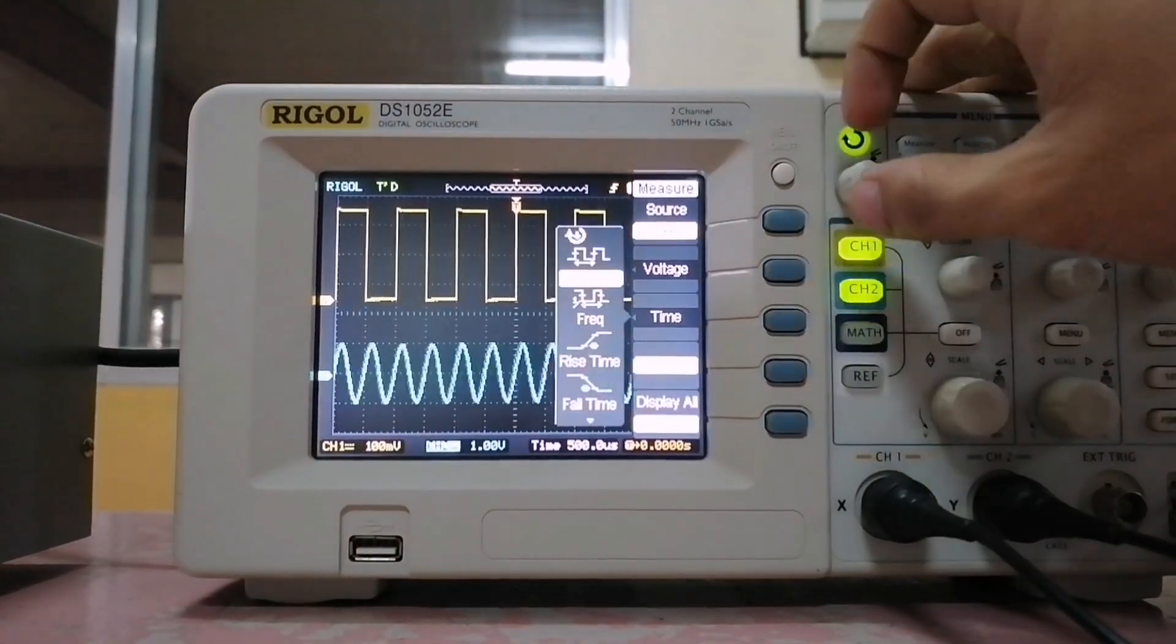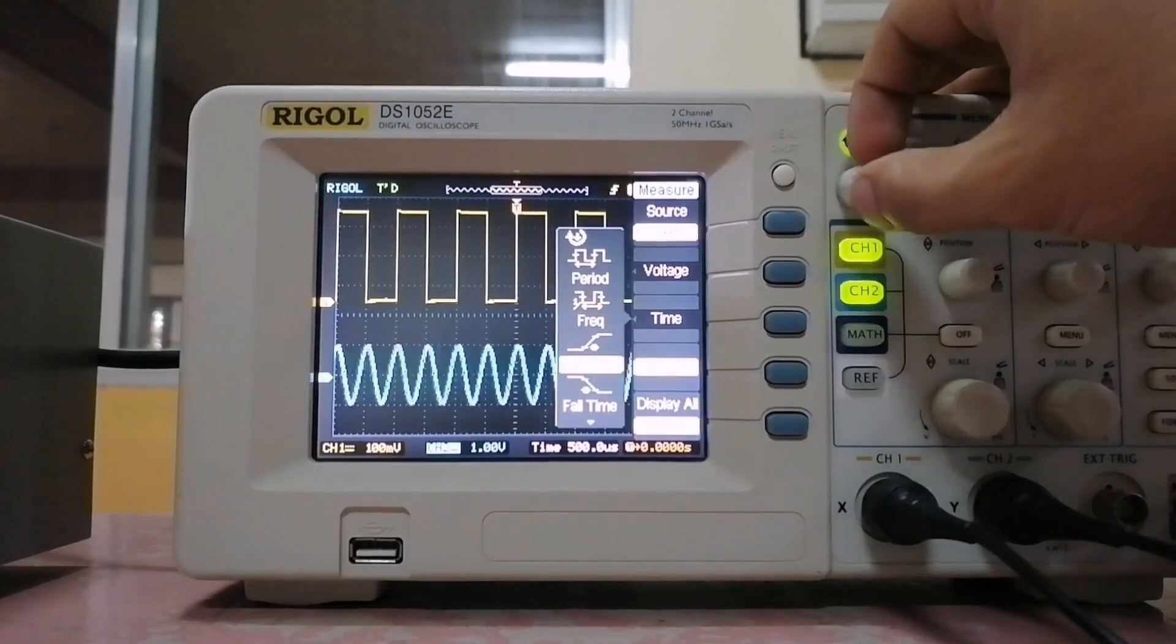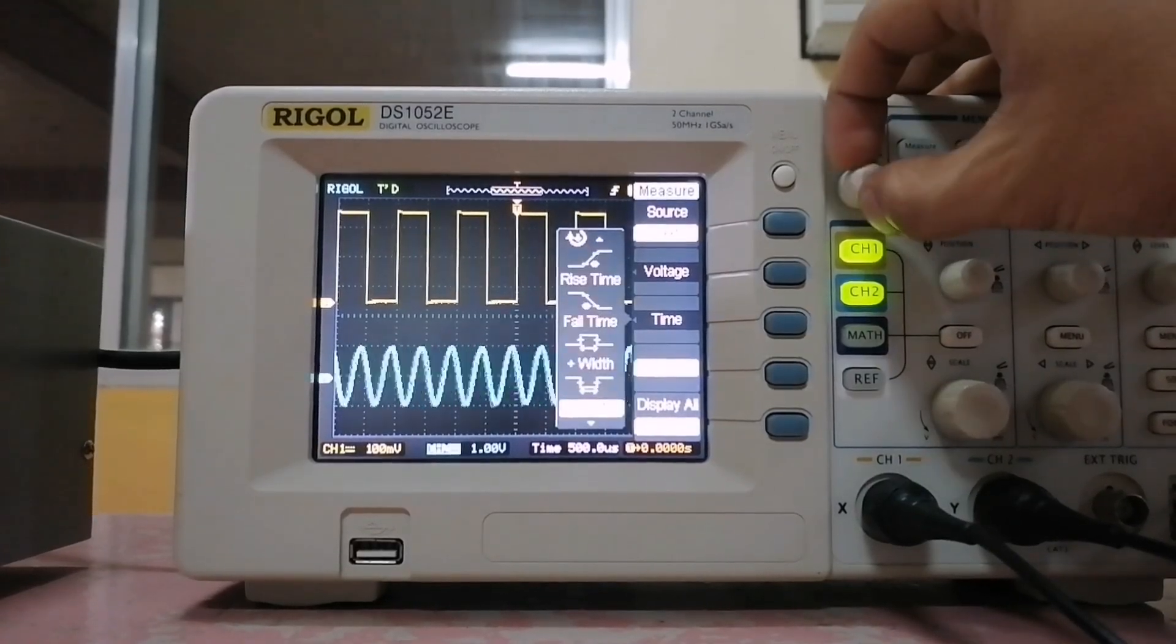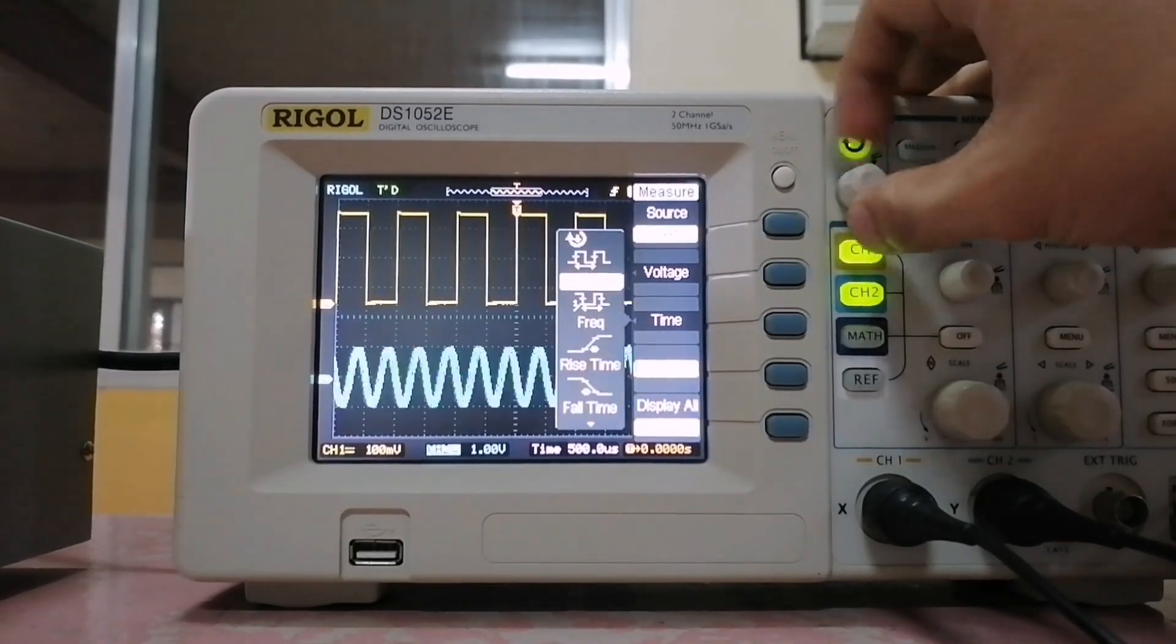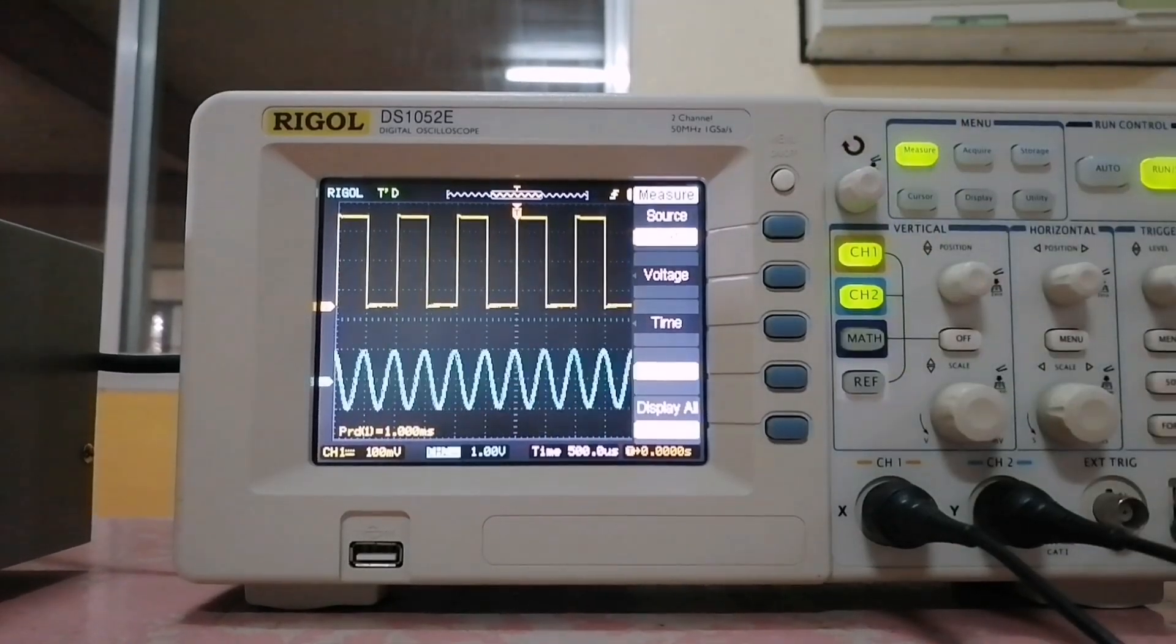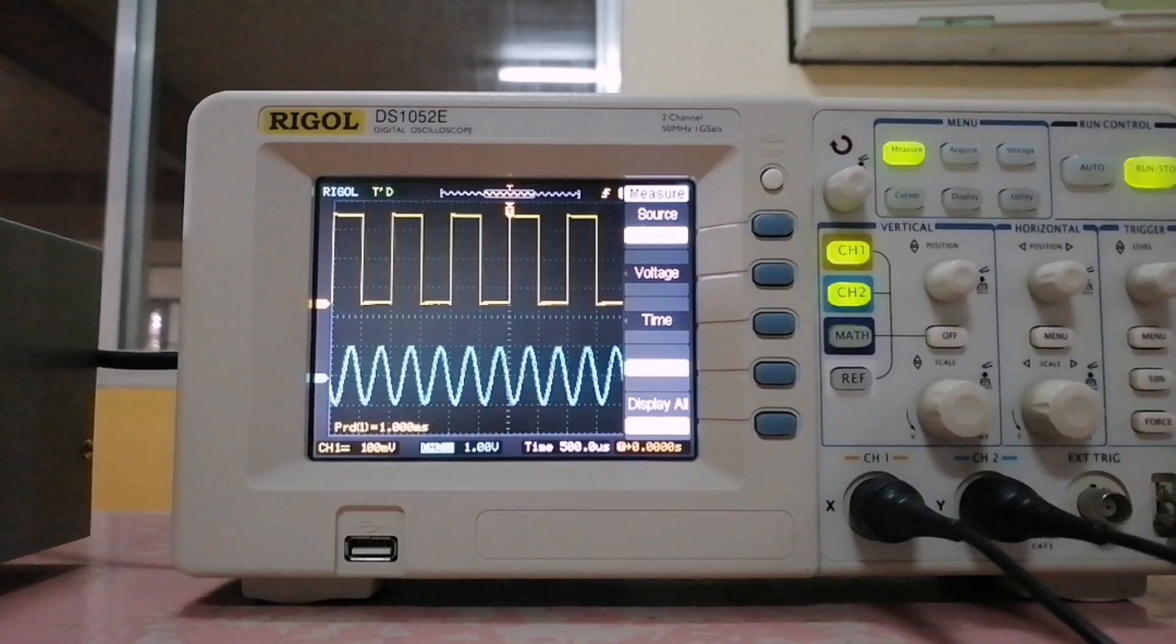You can also measure time properties such as period and frequency. To clear all measurements, just click the clear button.